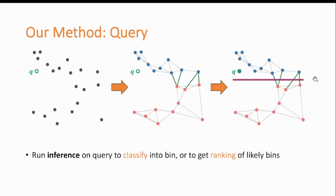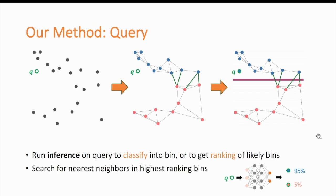When we get a query, we run inference through the learning model in order to classify the query into a bin or maybe to get a ranking of the most likely bins. For example, here, a small neural network may tell us that the query point is more likely to be in the blue bin and less likely to be in the red bin. Then, we search for nearest neighbors in the highest ranking bins. For example, here, we would first search through the blue bin, and if we have more time and want to get more accurate results, we also search through the red bin, and so on.